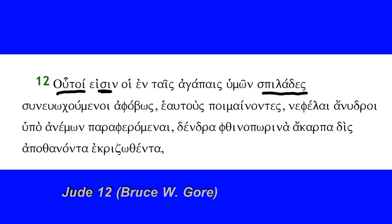The first of them is spilades. This word is actually translated normally as 'spots,' although that is a slightly different word. The Greek word spilos means spots, while spilades actually means a hidden reef — rocky outcroppings just beneath the water, invisible but very dangerous. It's possible that Jude meant hidden reefs, or it could be that one is confused with the other. Either way, the first description is hidden reefs or spots.